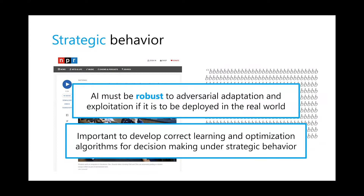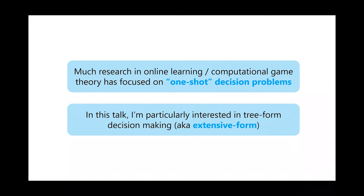There is a lot of research in fields like online learning and computational game theory focused exactly on how to compute optimal strategies when all agents are selfish or strategic, and how to learn what the best strategy is through repeated interactions. However, a lot of this research has focused on one-shot decision making problems. For this talk I'll be particularly interested in a more expressive model: sequential or extensive-form decision making.